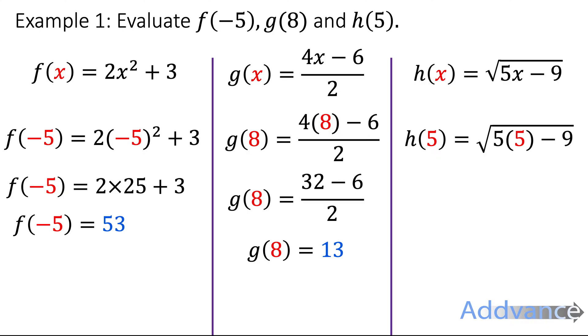Now h of 5, that's the square root of 5 times 5 minus 9, is square root of 25 minus 9, which is square root of 16, which is plus or minus 4. Just remember when you're square rooting something you get a positive and a negative number. Square root of 16 is 4 and it's also minus 4, and we use this symbol plus or minus to represent that.